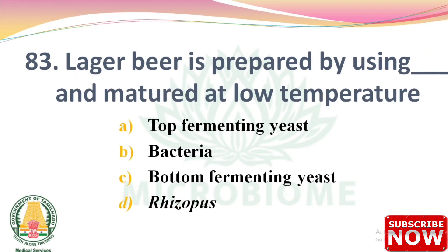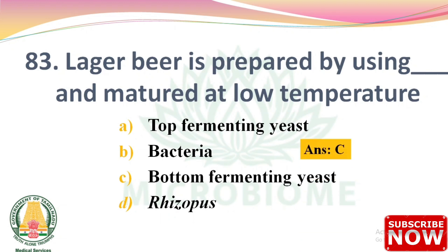Next question: lager beer is prepared by using dash and matured at low temperature — options: top fermenting yeast, bacteria, bottom fermenting yeast, rhizopus. The right answer is Option C: bottom fermenting yeast.